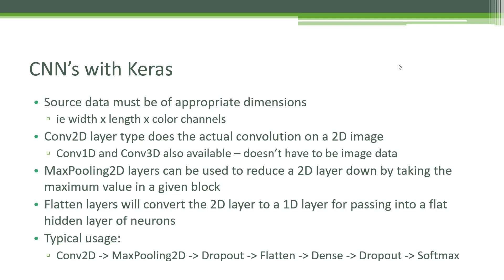There are specialized layer types in Keras for convolutional neural networks. For example, there's the Conv2D layer type that does the actual convolution on a 2D image — breaking up the image into little subfields that overlap each other for individual processing. There's also Conv1D and Conv3D layers available. You don't have to use CNNs with images; Conv1D can be used with text data as one-dimensional data, and Conv3D is available if you're dealing with 3D volumetric data. So there are a lot of possibilities.